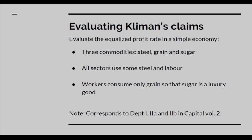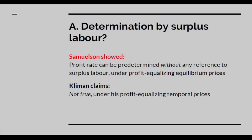On the YouTube page for this video there will be a link to the computer code for the model so that people can check it themselves. It's a simple economy using three commodities: steel, grain and sugar. All sectors use some steel and labour. Workers consume only grain, and sugar is a luxury good. These correspond roughly to Departments 1, 2a and 2b in Capital Volume 2.